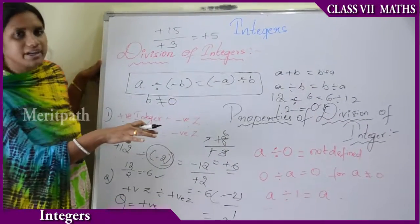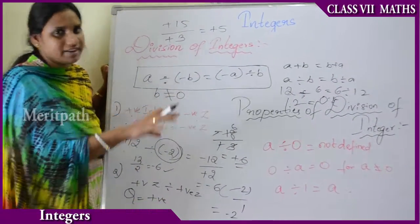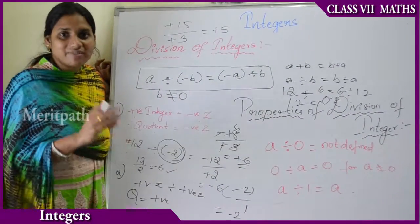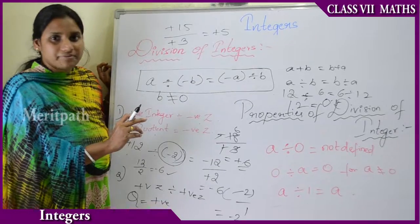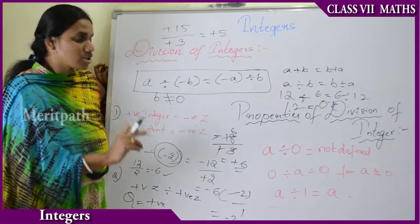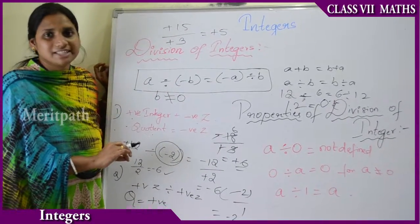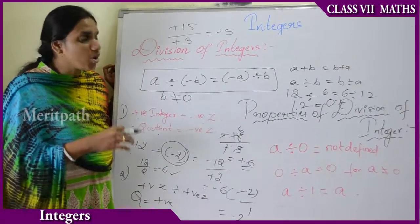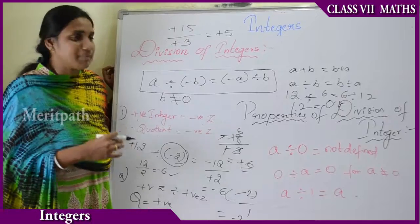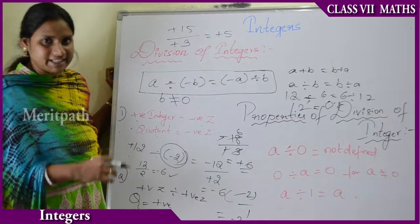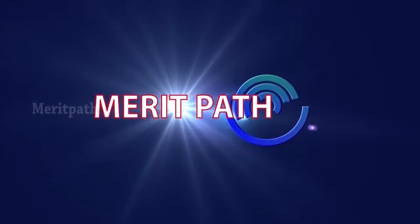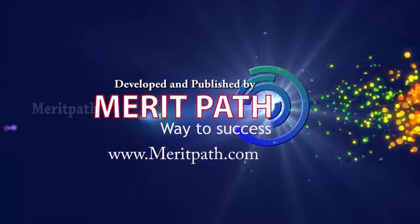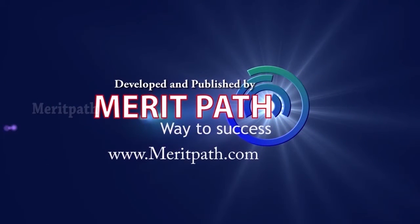These are the properties of division of integers. In this chapter on integers, we have covered addition of integers, subtraction of integers, multiplication of integers, and division of integers, along with all the properties that hold for each of these operations.